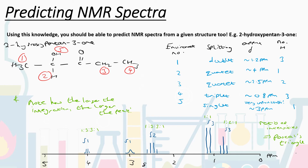Using knowledge of the N+1 rule and electronegativity, you should be able to predict NMR spectra for a given structure. Let's take 2-hydroxypentan-3-one. I've drawn this out. First, work out the number of environments. There's no symmetry in this molecule — no mirror planes. All hydrogens are in different environments, but within each group (CH₃, CH₂), they are equal due to free rotation. So we have five hydrogen environments: CH₃ at the left end (1), the CH hydrogen on carbon bearing the OH (2), the CH₂ group after the carbonyl (3), the CH₃ at the right end (4), and the OH hydrogen (5).